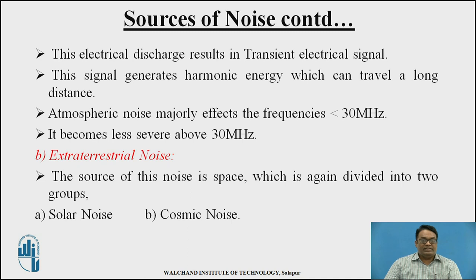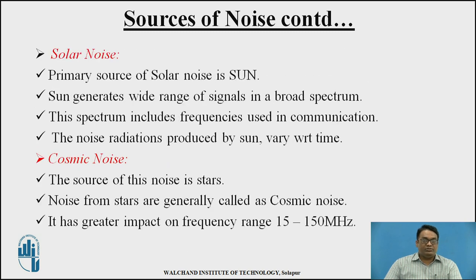Extraterrestrial noises occur in space and are divided into two basic types: solar noise and cosmic noise. The primary source of solar noise is the sun, which generates a wide range of signals across a broad spectrum used in communication, and these noise radiations vary with respect to time. Cosmic noise originates from stars and has a greater impact for a frequency range of 15 to 150 MHz.